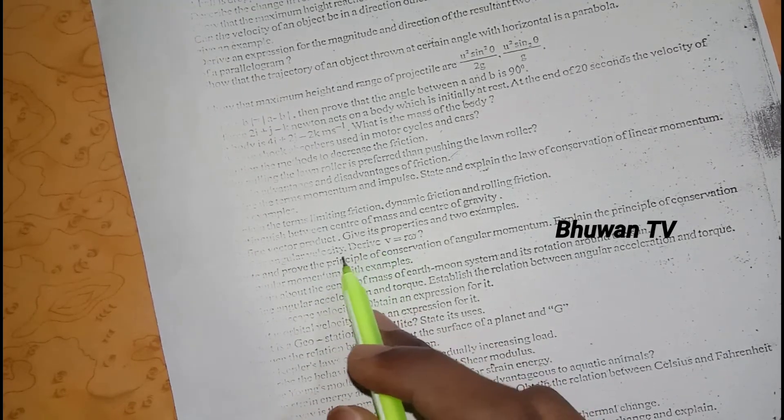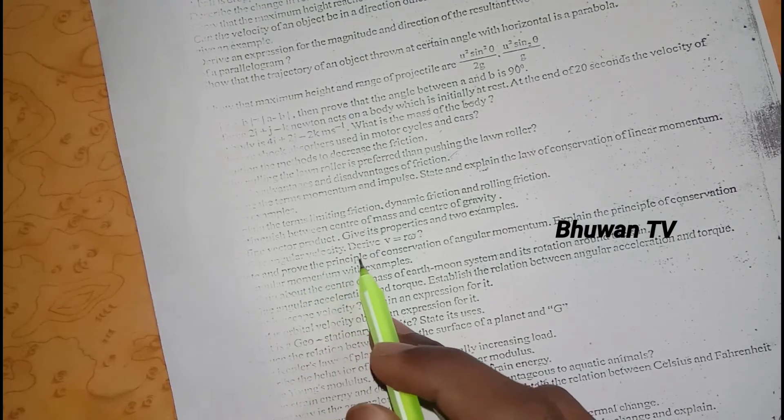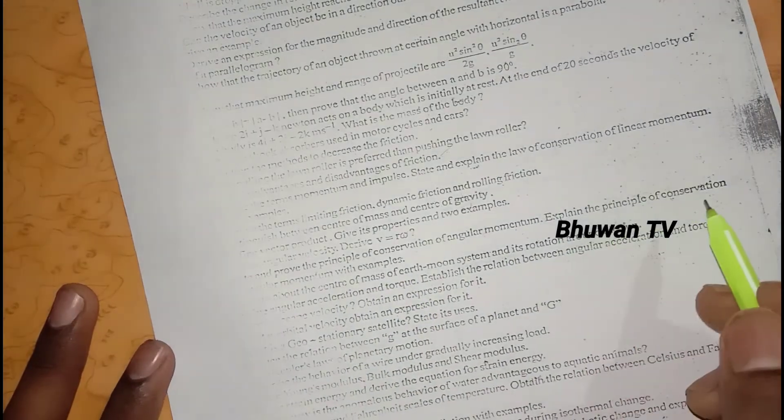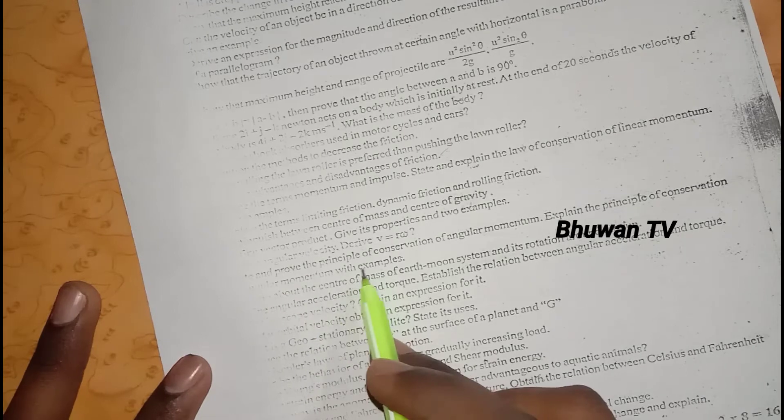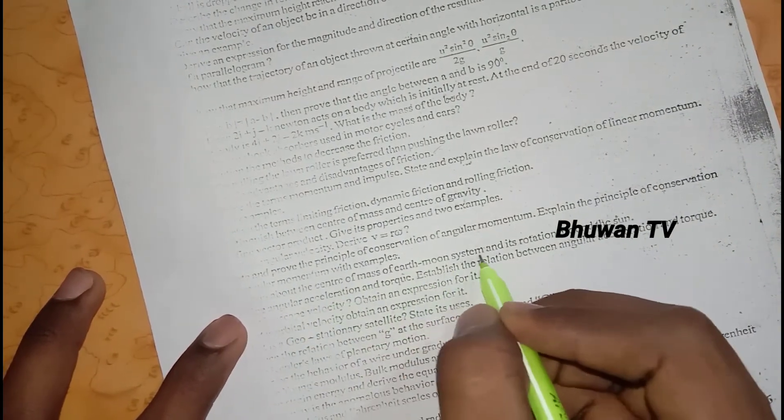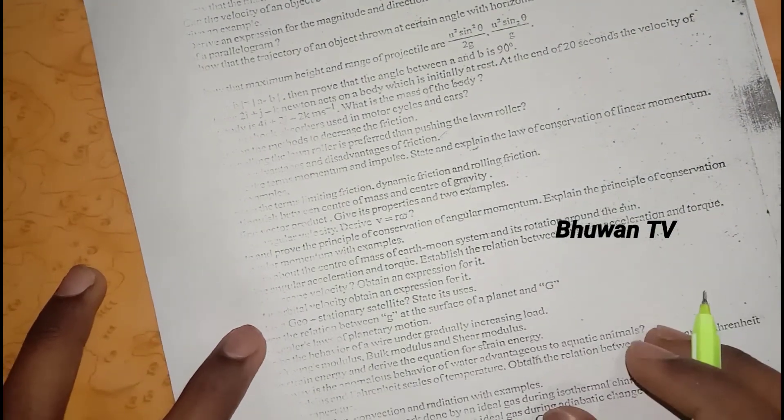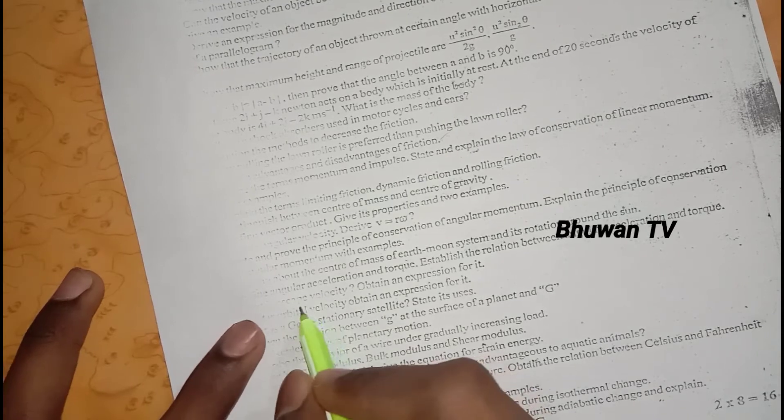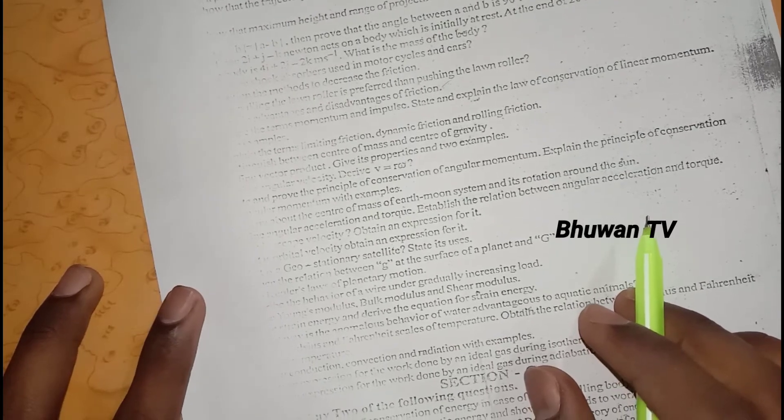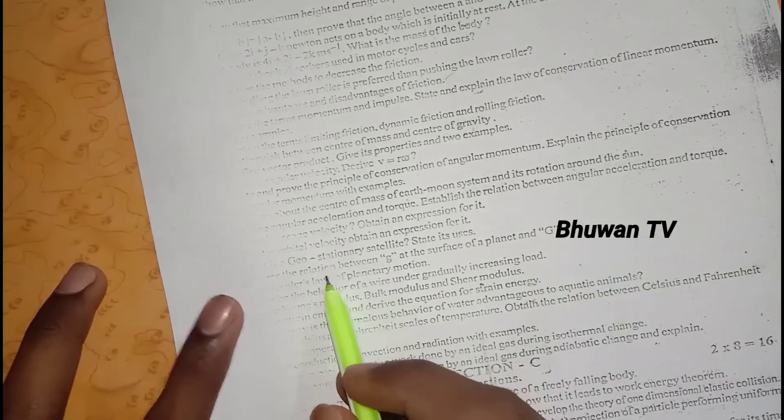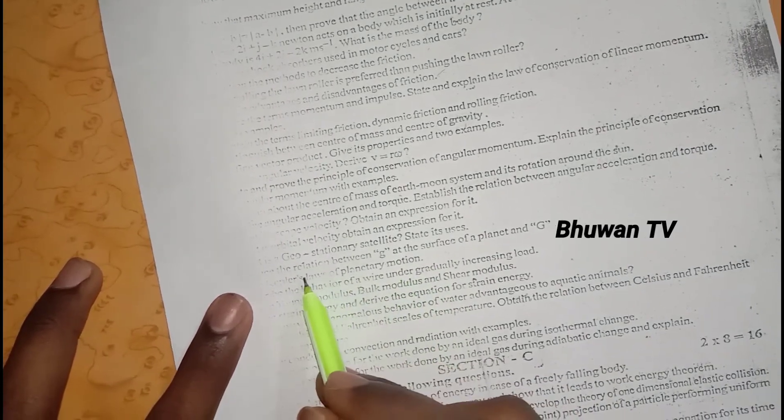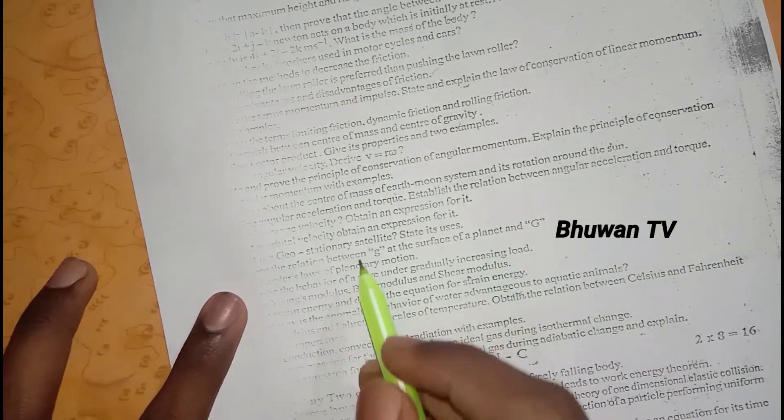Define vector product, give its properties and two examples. Define angular velocity, derive v equals r omega. State and prove the principle of conservation of angular momentum. Explain the principle of conservation of angular momentum with examples. Explain about the center of mass of earth-moon system and its rotation around the sun. Next, geostationary satellites and its users. Kepler's law of planetary motion. Relation between the surface of the planet g small g capital.